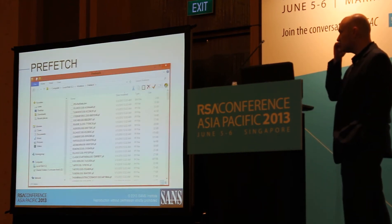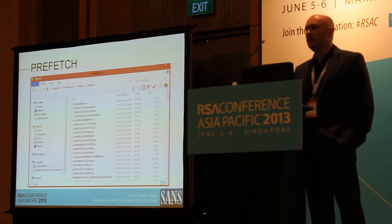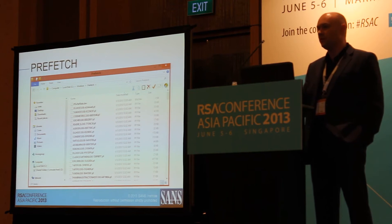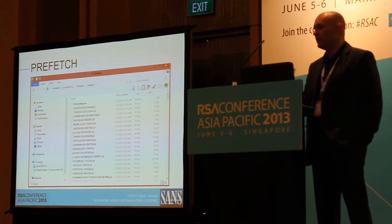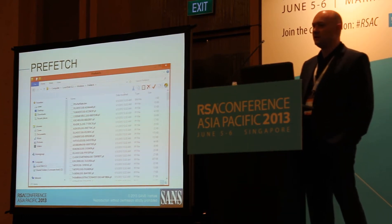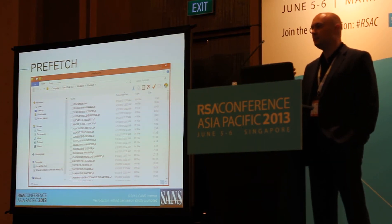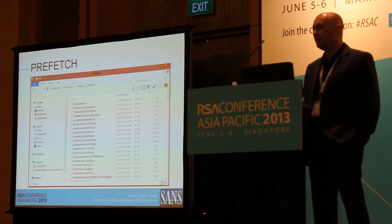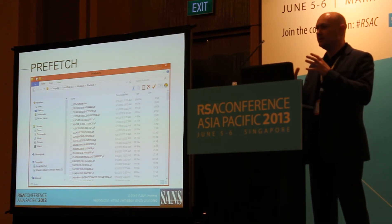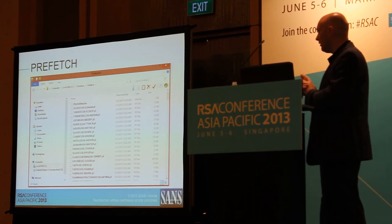Now let's talk about program execution. If you're doing a malware case and you want to identify suspicious programs that were run, or perhaps you've got a file and want to see what executable was associated with it, Windows has a piece of functionality called Prefetch — or Superfetch. What Prefetch does is it preloads information into memory to enable programs to run more quickly. Because Windows is storing this information, as forensic examiners we can retrieve and use it to help our analysis.